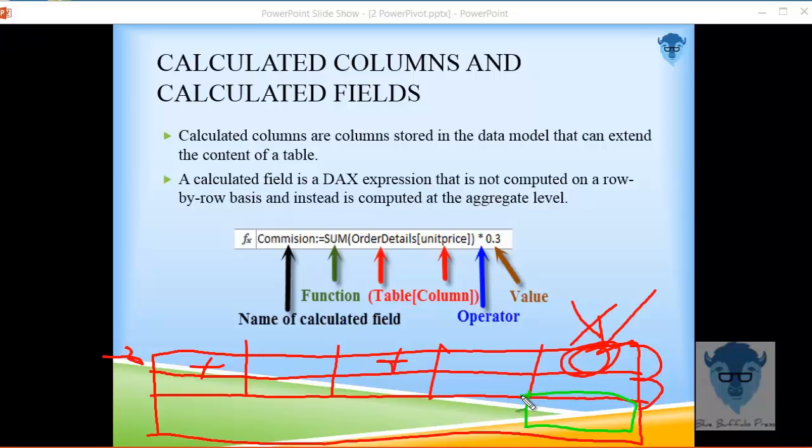The way it works is I cannot just sum these up. Instead, I have to create a calculated field. In previous iterations of the product, we called this a calculated measure, which I prefer, doesn't matter. Now we call it a calculated field.